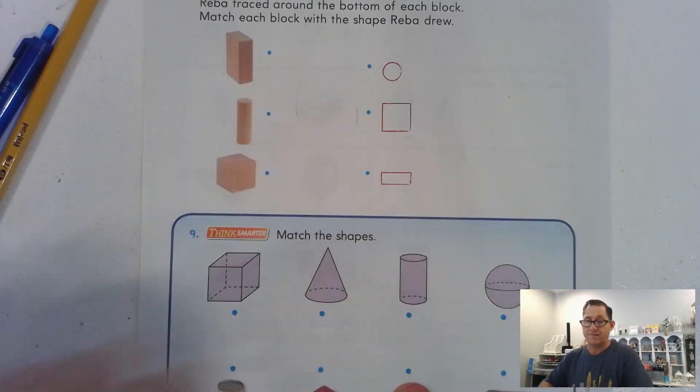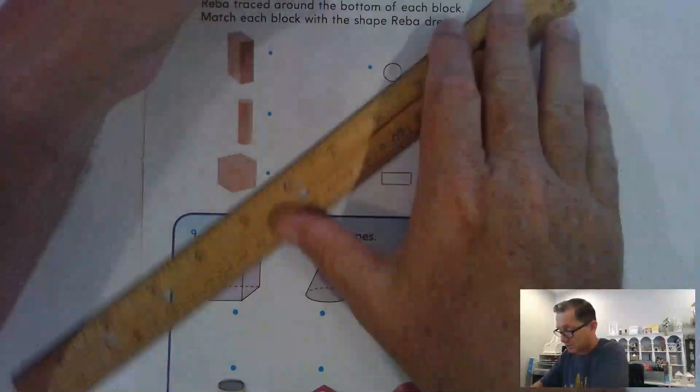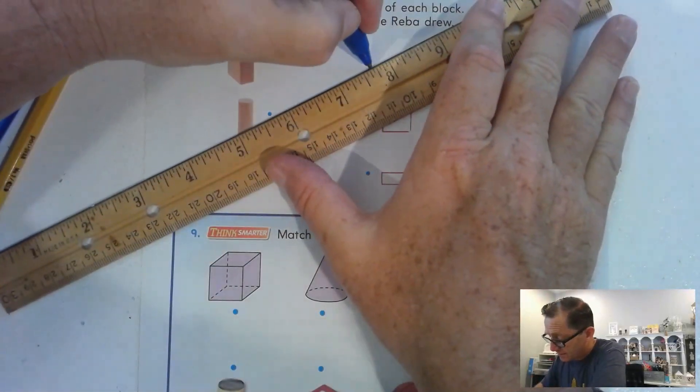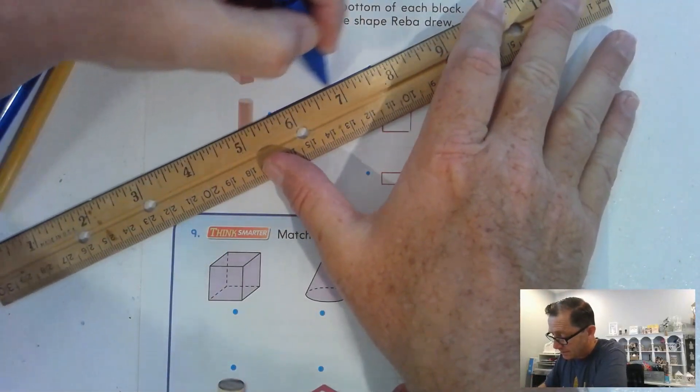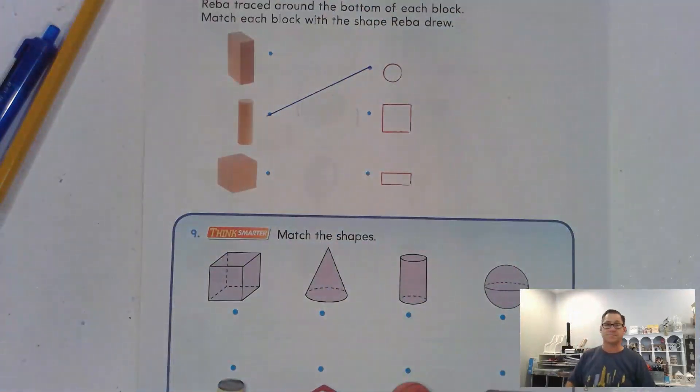The cylinder is the obvious one, right? Because it has curved surfaces. So, let's just connect those two.